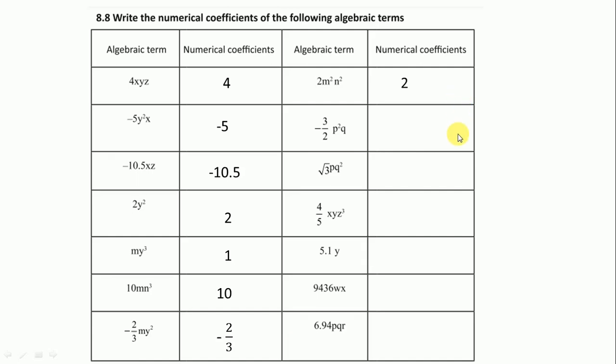Here is 2, -3/2, √3, 4/5, 5.1, 9436, and here is 6.94. So this is the learning sheet number 30. In the next class we will solve 31. Don't forget to like, subscribe, and share our channel. Thanks for watching.